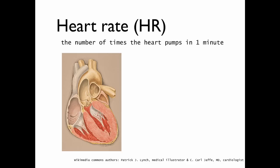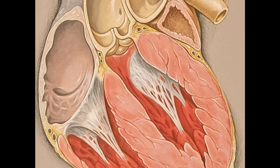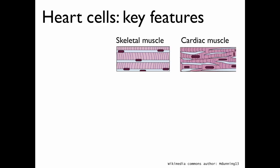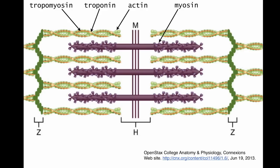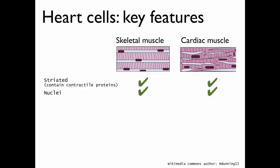Heart rate is the number of times the heart pumps in one minute. Let's take a closer look at the myocardium. What you can see here is a drawing of cardiac muscle, and we're going to compare it to skeletal muscle. What you can notice in both of these diagrams is that both skeletal muscle and cardiac muscle are striated. That means they both contain contractile proteins such as myosin, actin, troponin, and tropomyosin, so that they both contract. Both skeletal muscle and cardiac muscle contain nuclei.